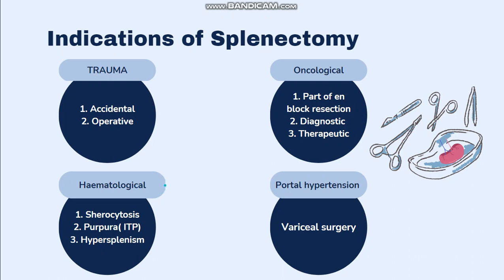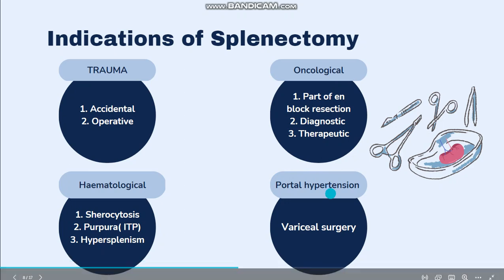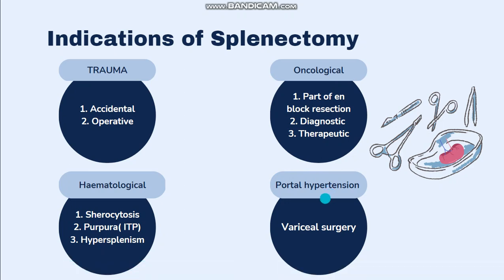It can be indicated in hematological diseases, such as hereditary spherocytosis to reduce anemia, thrombocytopenia, ITP, and hypersplenism. It can also be indicated in portal hypertension in association with shunt or variceal surgery.